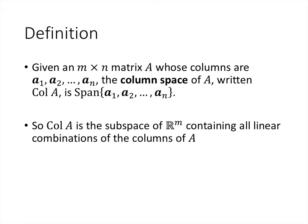Here's the definition. Given an m by n matrix A — that means m rows and n columns — let's name the columns of A as A1, A2, and so on through An. The column space of A is simply the span of that set of vectors, all of the possible linear combinations of those column vectors. Whenever we take the span of a set of vectors, that gives us a subspace. Because the matrix has m rows, each of those vectors has m entries, and so this is a subspace of R^m.